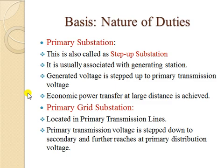Next to that there will be a primary grid substation, which takes energy as input from the primary substation and passes that energy to the next substations by stepping down. These are located at primary transmission lines, and the primary transmission voltage is stepped down to a secondary level and further reaches the primary distribution voltage level.